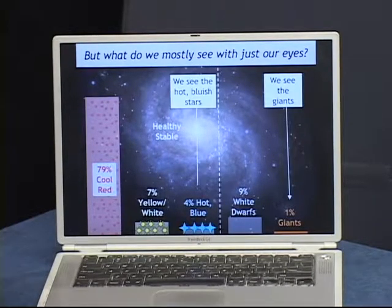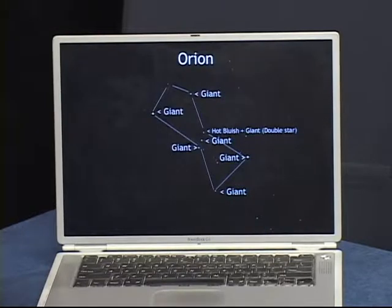It shows what we can see with just our eyes. It takes you through Orion, the Summer Triangle, the Big Dipper and Cassiopeia, showing what kinds of stars each of the brightest stars are, primarily giant stars and several hot, blue stars.